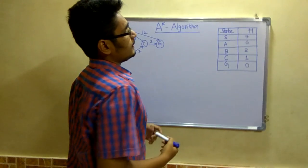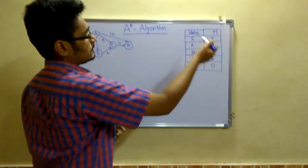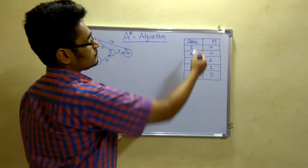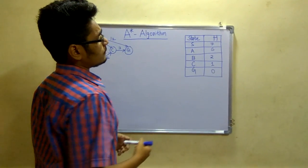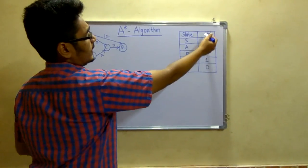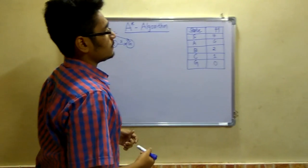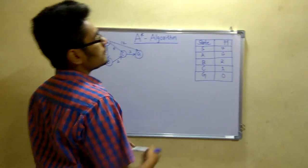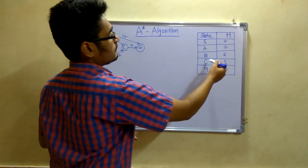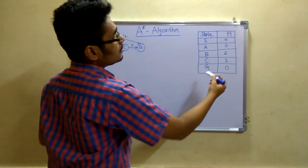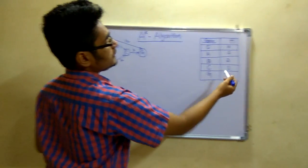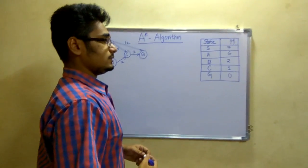Let me give you this table. This is the state table as well as the heuristic value associated with each of these states. H stands for the heuristic value. For S it is 7, A it is 6, B it is 2, C it is 1, and G it is 0.